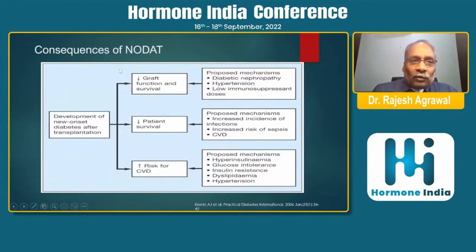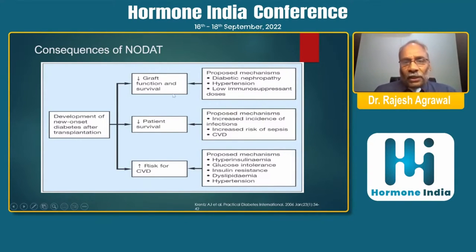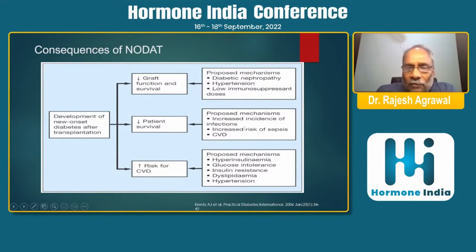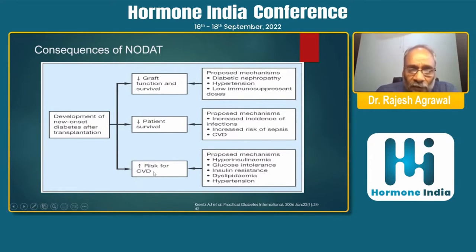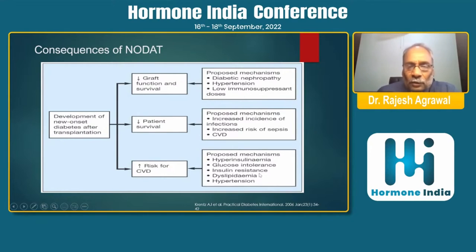Consequences of NODAT include decreased graft function due to diabetic nephropathy, hypertension, or lower immunosuppressant doses. There is decreased patient survival because of increased incidence of sepsis, infection, and cardiovascular disease, and increased risk for cardiovascular disease due to hyperinsulinemia, glucose intolerance, hypertension, dyslipidemia, and insulin resistance.